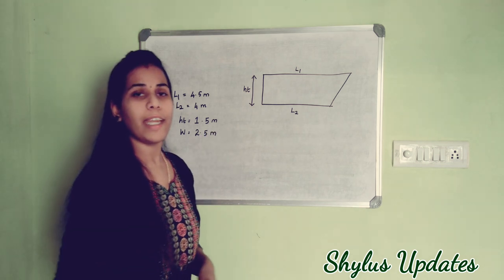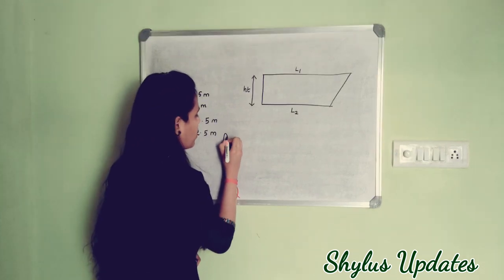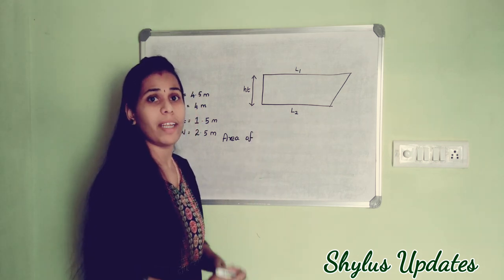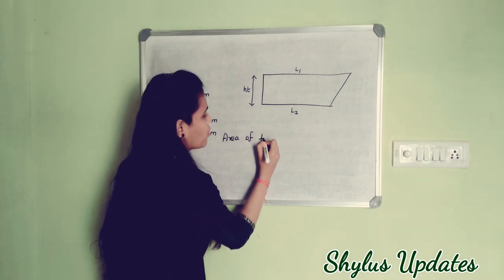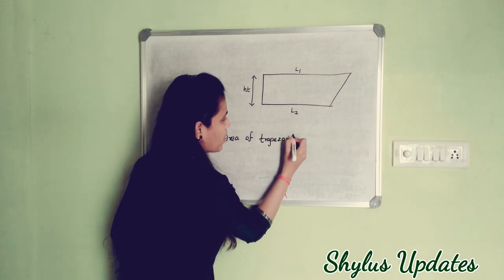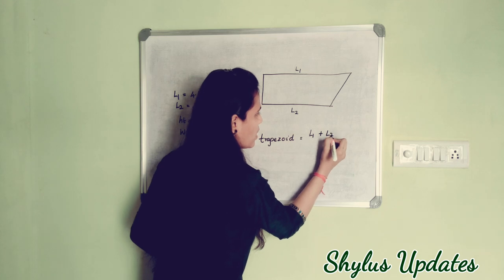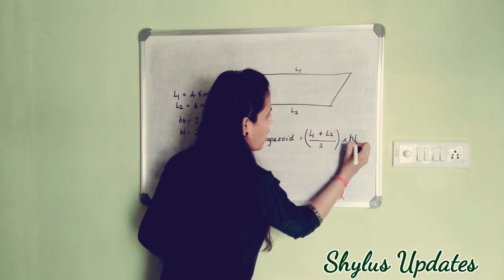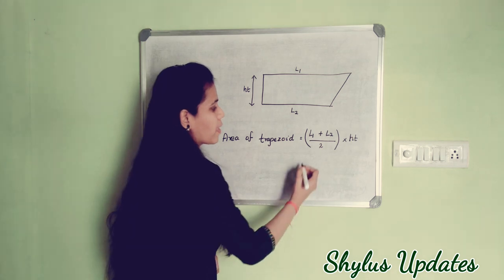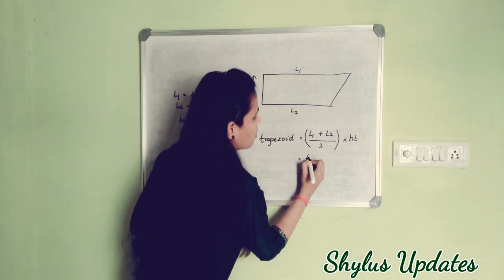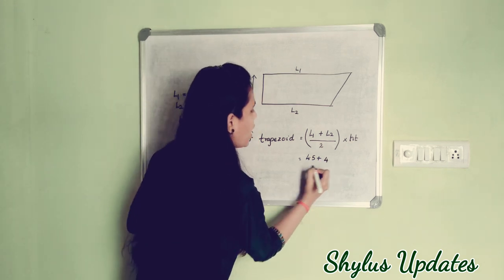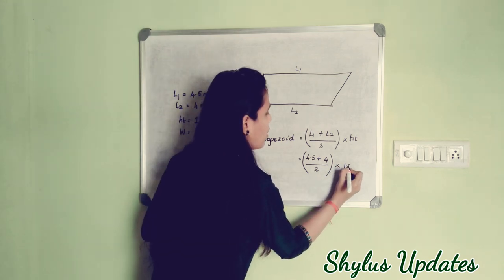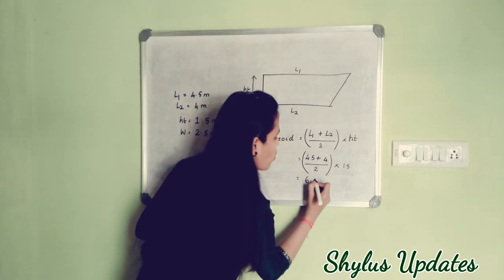Since this lorry is trapezoidal in shape, we have to calculate the area of a trapezoid. The formula is: area of trapezoid equals (L1 + L2) divided by 2, multiplied by height. So that is (4.5 + 4) divided by 2, multiplied by 1.5 meters. When you calculate this, you get the answer 6.3 square meters.